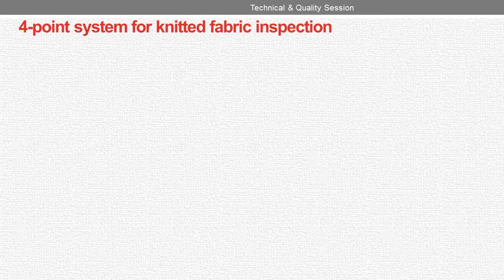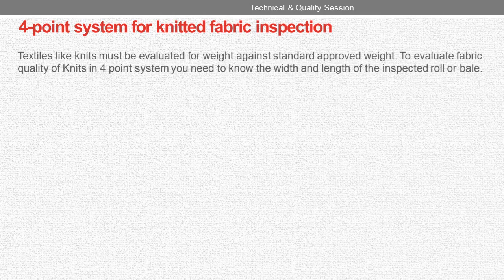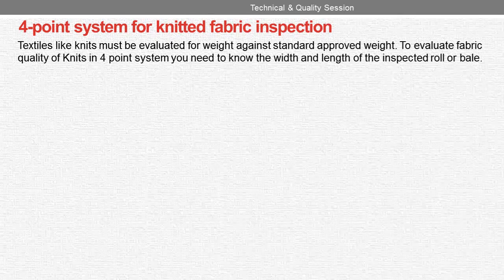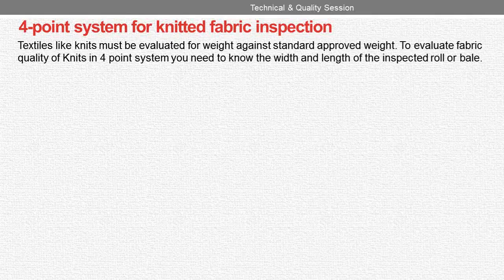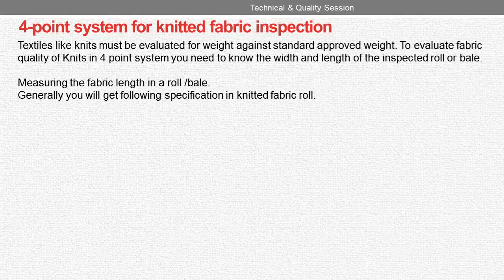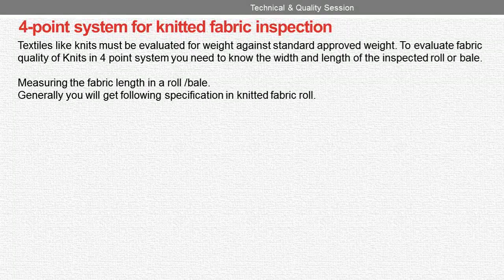4-point system for knitted fabric inspection. Textiles like knits must be evaluated for weight against the standard approved weight. To evaluate fabric quality of knits in the 4-point system, you need to know the width and length of the inspected roll or bale. When measuring the fabric length in a roll or bale, you will generally get the following specifications in a knitted fabric roll.